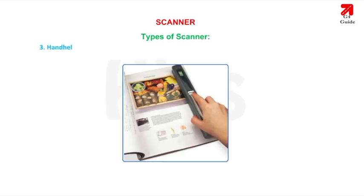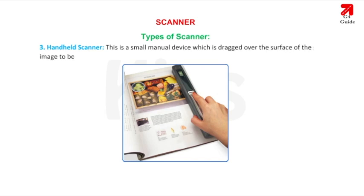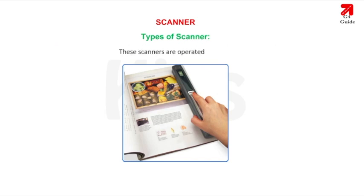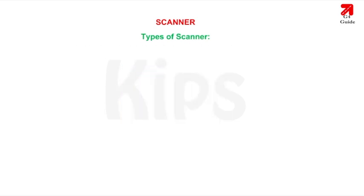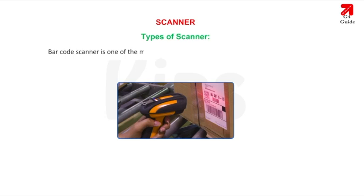3. Handheld Scanner: This is a small manual device which is dragged over the surface of the image to be scanned. These scanners are operated by hand, and it is difficult to operate them as a steady hand is required to avoid distorted images. Barcode scanner is one of the most utilized handheld scanners, used in shopping malls.